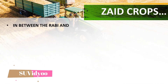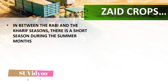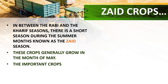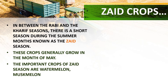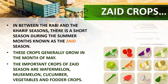In between the Rabi and the Kharif seasons, there is a short season during the summer months known as the Zayed season. These crops generally grow in the month of May. The important crops of the Zayed season are watermelon, muskmelon, cucumber, vegetables and fodder crops.